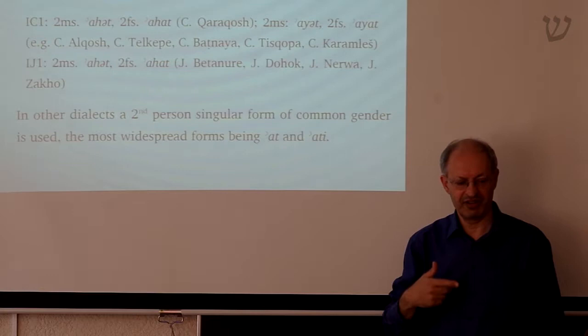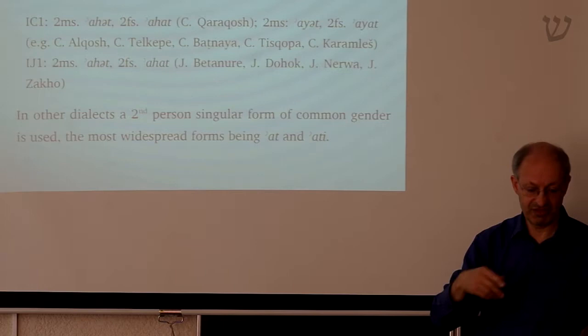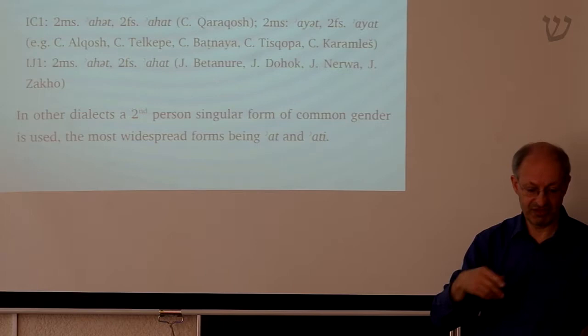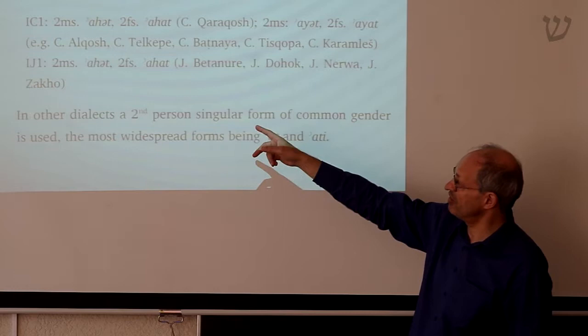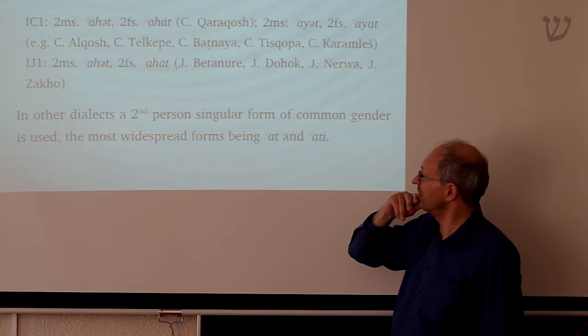This often happens in the formation of independent pronouns: they change their shape by analogy with verbal inflection, or sometimes with pronominal suffixes. This has happened in a number of other dialects too — many dialects have 'ayat', 'ayit', and 'ayat' for masculine and feminine. So the second person pronoun shows considerable variation across dialects.